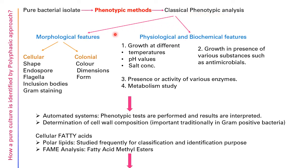Classical phenotypic analysis can be differentiated into morphological features. For cellular morphology, you study the shape, whether the culture can produce endospores, whether it has flagella, any inclusion bodies, and you do Gram staining. Colonial morphological features include the color of the colony, dimensions, and form.